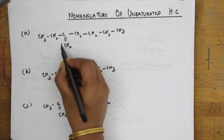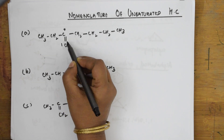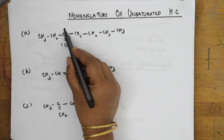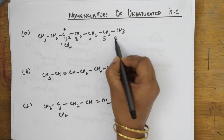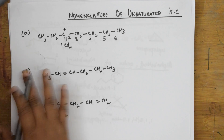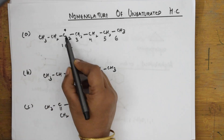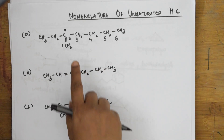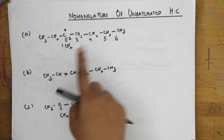For alkenes, the double-bonded carbon should get the minimum number. Start numbering from the end closest to the double bond: one, two, three, four, five, six. If you number from the other end, the double bond gets a higher number — that is incorrect. Alkenes must always receive the lowest possible number.